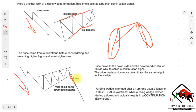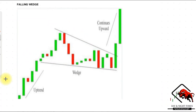The rising wedge has an opposite pattern, which is the falling wedge. It can be either a reversal or a continuation pattern. As a reversal signal, it forms at the bottom of a downtrend, indicating that an uptrend would come next — unlike the rising wedge at the end of an uptrend. When the falling wedge appears at the end of a downtrend, we can expect an uptrend to start forming. It also acts as a continuation signal when it forms during an uptrend, implying that upward price action would resume.